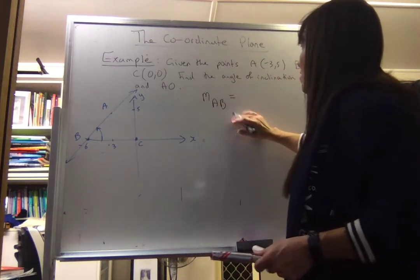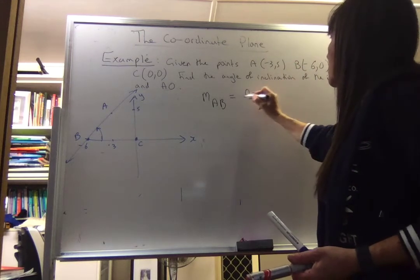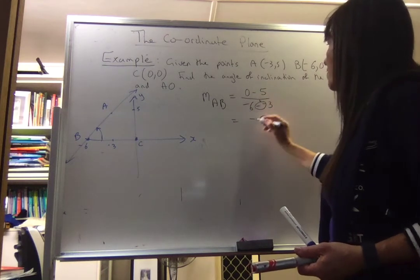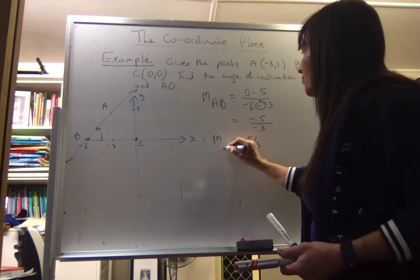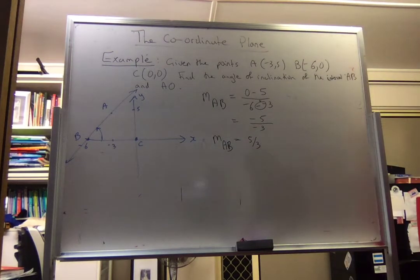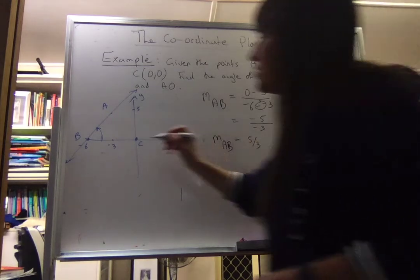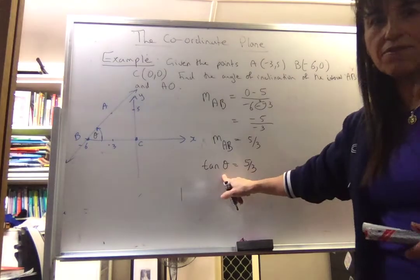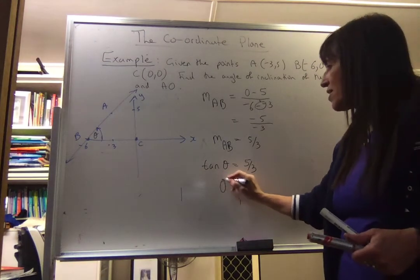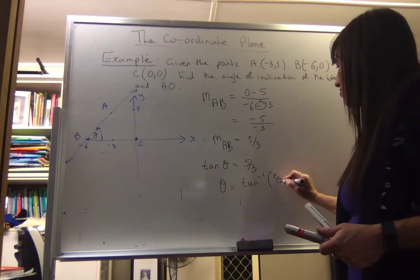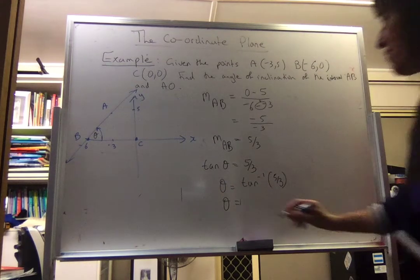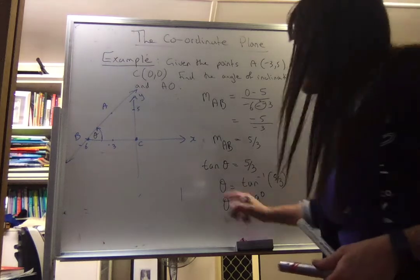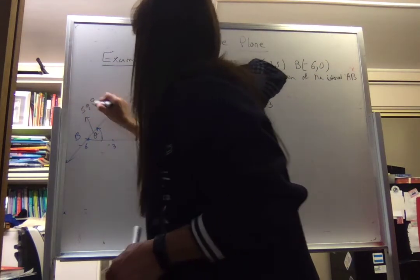First of all, I need to find the gradient of AB. The gradient of AB is y₂ minus y₁ over x₂ minus x₁ — that's 0 minus 5 over negative 6 minus negative 3. That's negative 5 over negative 3, and the two negatives become a positive, so we get 5/3. Now, tan θ equals 5/3. Finding the angle of inclination using inverse tan of 5/3 gives approximately 59 degrees to the nearest degree. So that angle is 59 degrees.